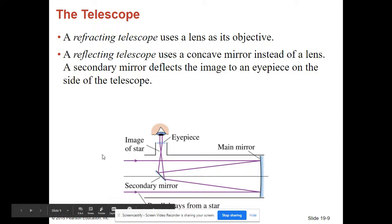So here, you have these light rays coming in from infinity. Here you have your concave mirror, and then it bounces off your concave mirror, hits a plain flat mirror, and goes out the side of the telescope into an eyepiece.